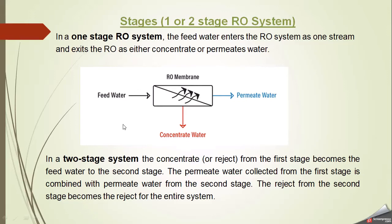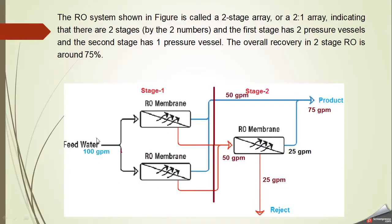In a two-stage system, the concentrate or reject from the first stage becomes the feed water to the second stage. So this concentrate enters another membrane. The permeate collected from the first stage is combined with the permeate from the second stage, and the reject from the second stage becomes the reject for the entire system. You can see in this figure that feed water enters two RO membranes in stage one, the permeate is collected separately, and the concentrate enters another RO membrane called stage two.